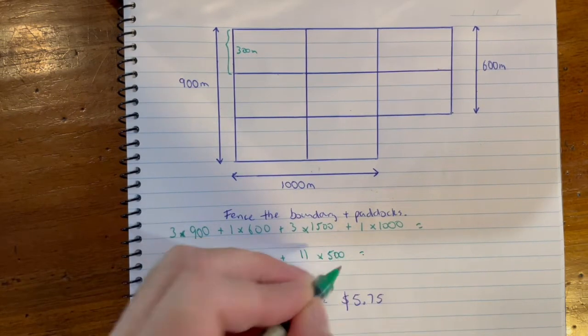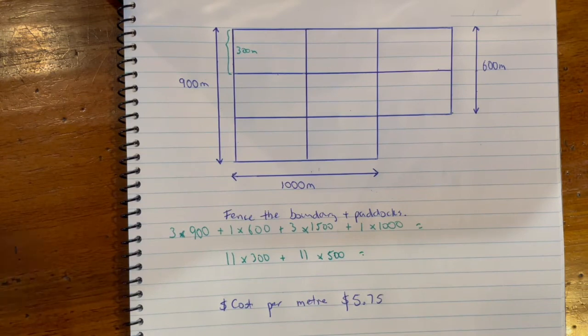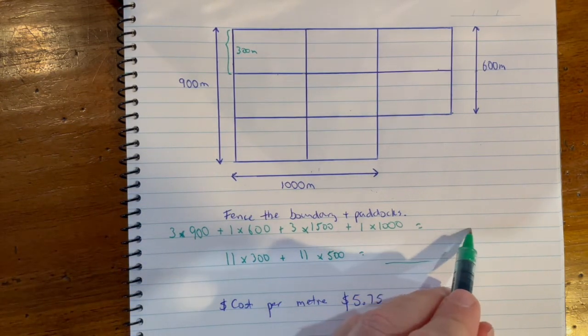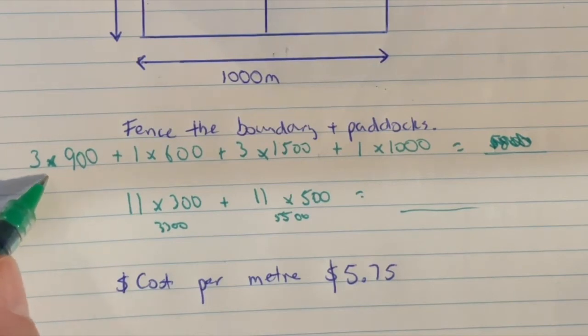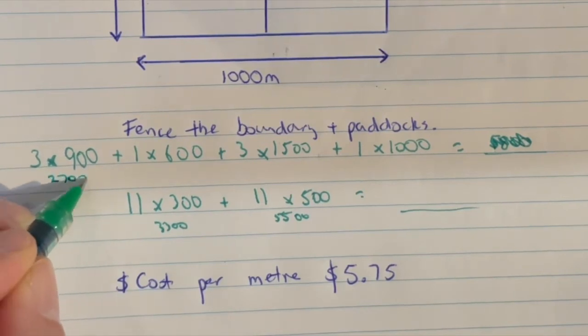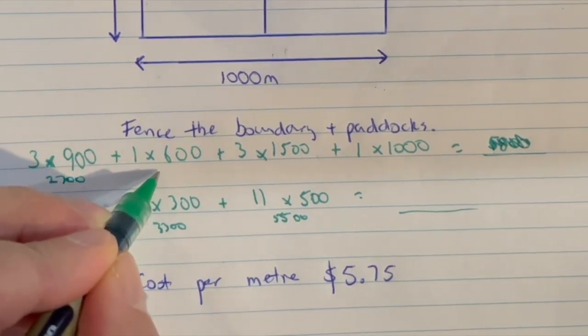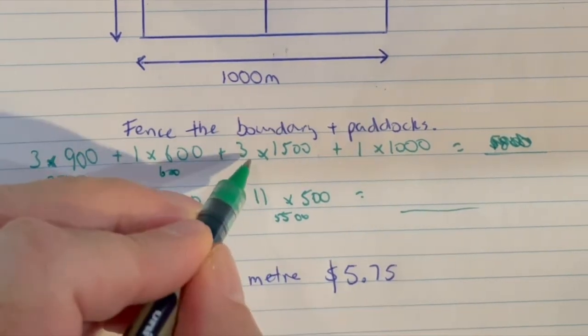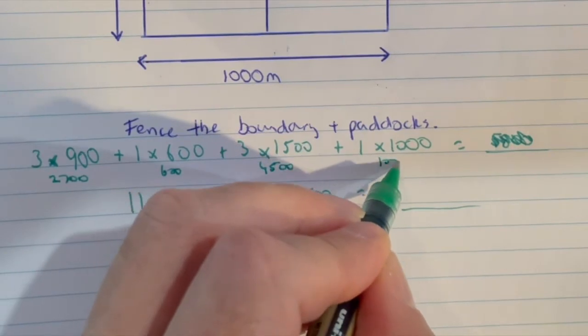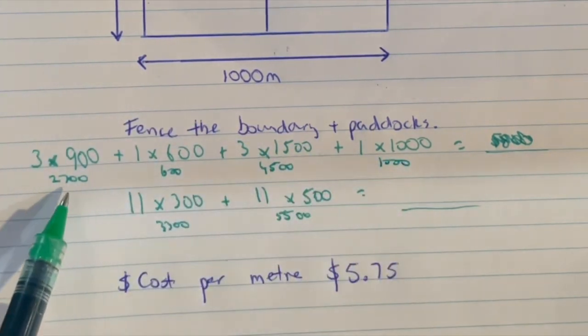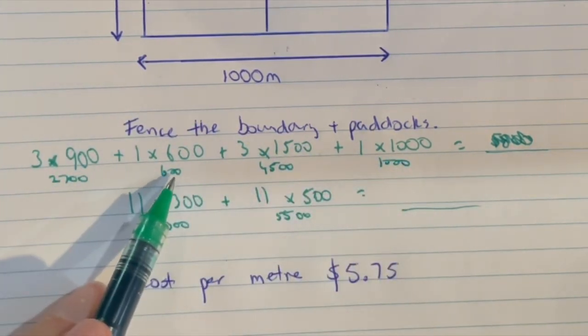It would just be a case of working out those two answers and that would give you the total number. Now that should in theory give you the exact same answer. So in theory here you'd have 2,700 plus 600, plus here you'd have 4,500 and 1,000. So 2,700 plus 600 is 3,300.